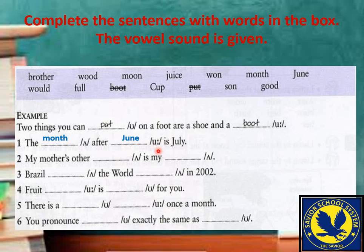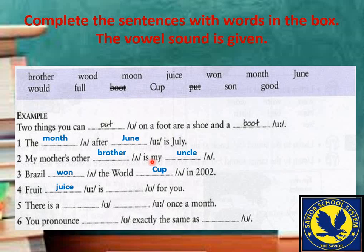'Brazil won the world cup in two zero zero two' — دونوں میں ایک ہی sound آئے گی۔ 'Fruit juice is good for you' — 'fruit' اور 'juice' دونوں میں long uː vowel آتا ہے، اور 'good' میں ʊ short vowel آتا ہے — وہی جو 'look' یا 'put' میں آ رہا تھا۔ 'There is a full moon once a month' — 'full' short ʊ form ہے اور 'moon' long uː form ہے۔